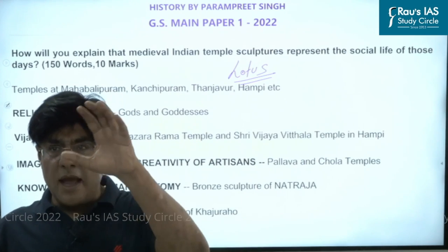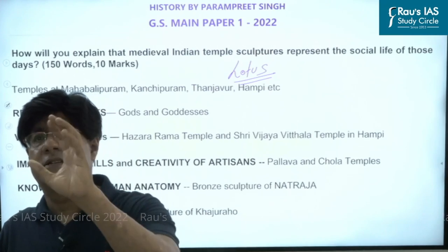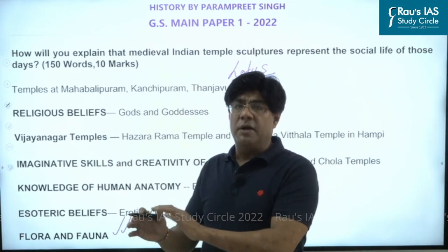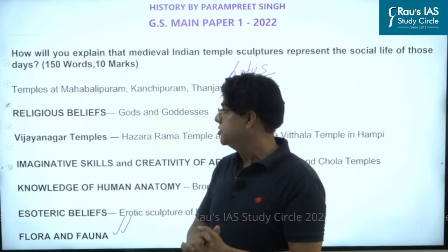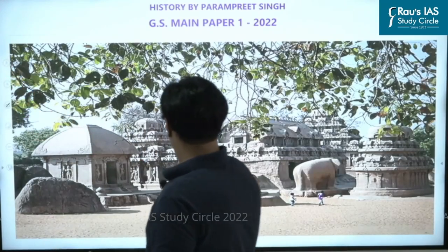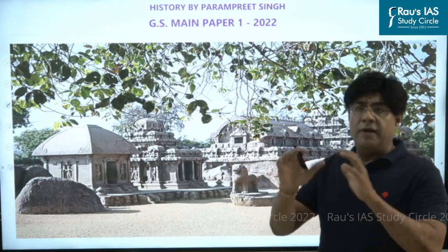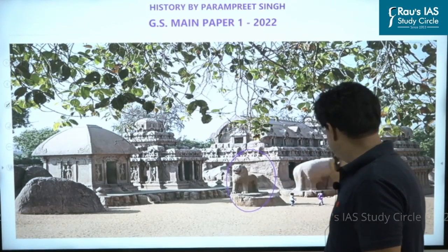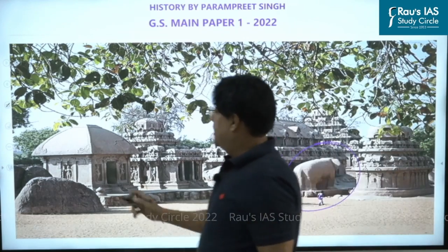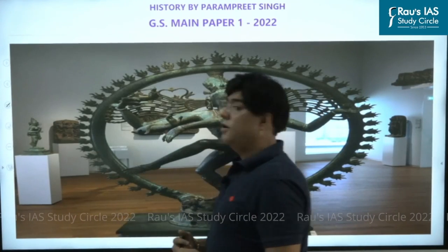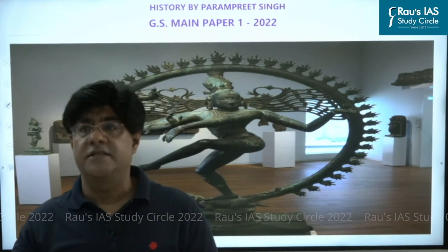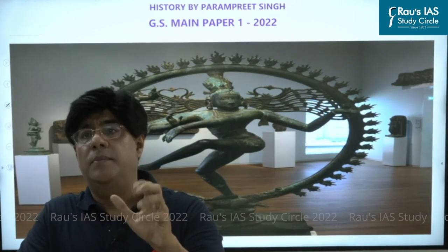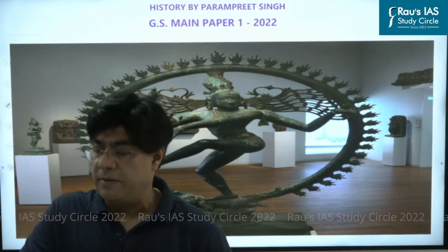By writing about different information which comes from the sculptures and giving examples, you can easily complete this answer in 150 words, and the answer would be very good because all needed information is provided. The images of animals found inside the temple canvas, as well as the image of Nataraja, illustrate how sculptures inside and on the outer walls of temples tell us about the social life and religious beliefs of that time.